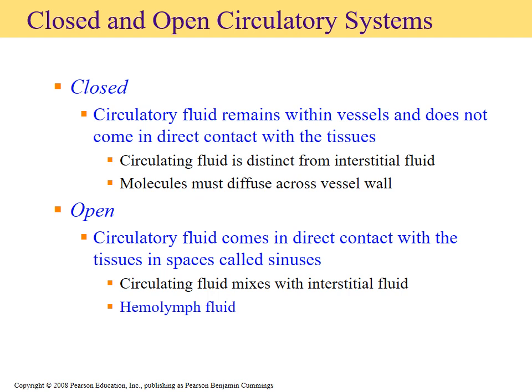On our first slide we're going to look at what exactly it means to have both. A closed circulatory system basically means that the fluid within the circulatory system — the blood — is kept within the blood vessels and does not come in direct contact with the tissues. The fluid around the tissues is referred to as interstitial fluid. These two do not mix, so we have a closed system.